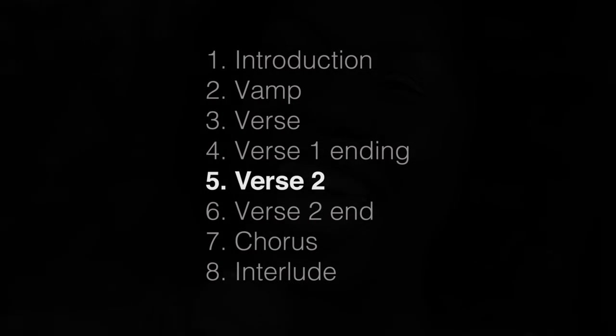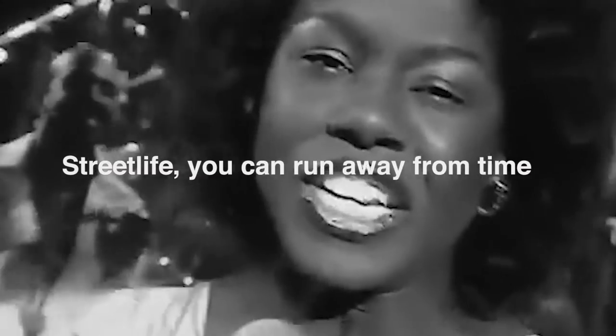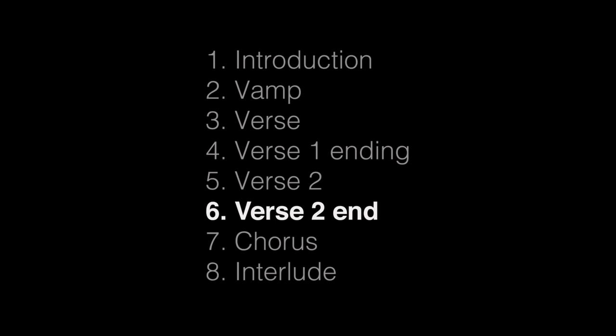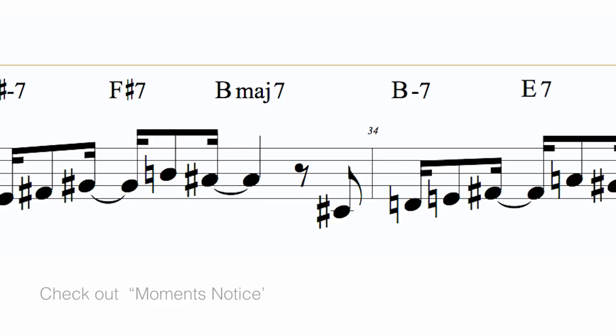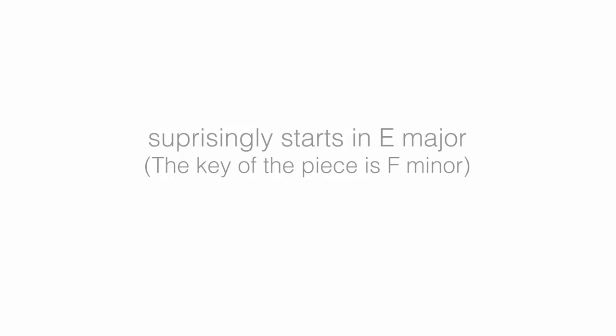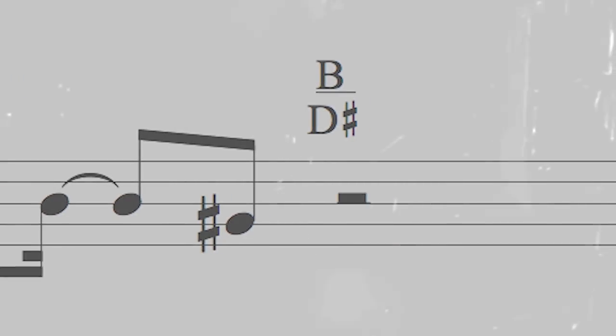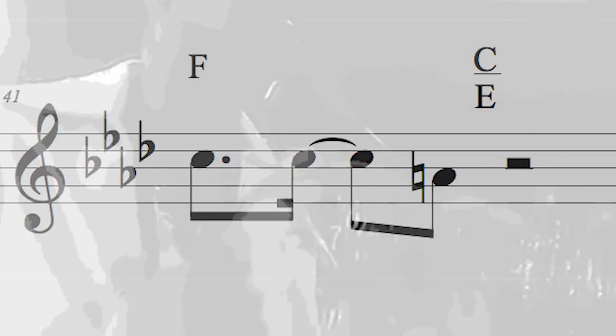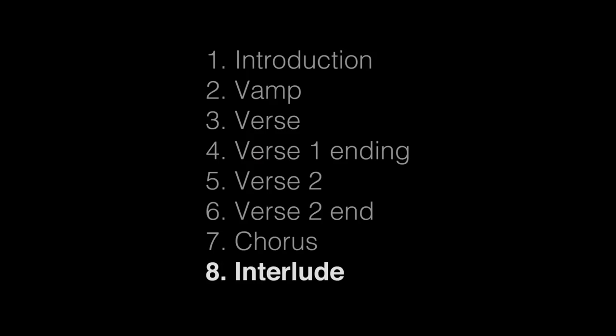The fifth section is the return to the verse. The sixth section is the second time ending of the second verse — this time the song modulates as if it were a John Coltrane tune. The seventh section is the chorus, which surprisingly starts in E major, and halfway through modulates up half a step. The eighth and last section I label as an interlude. This section serves to settle down the listener for eight bars before the structure is repeated again in its entirety.